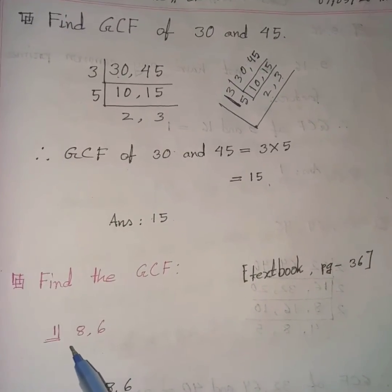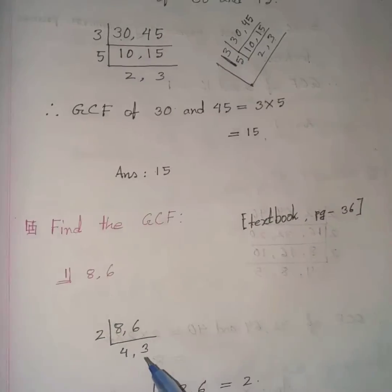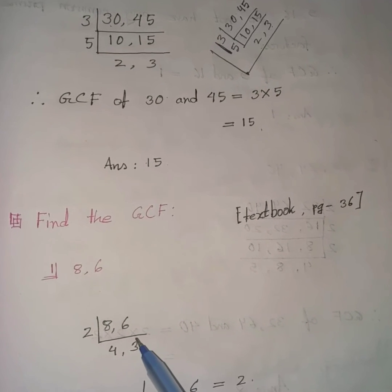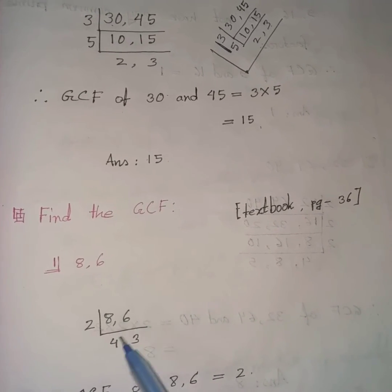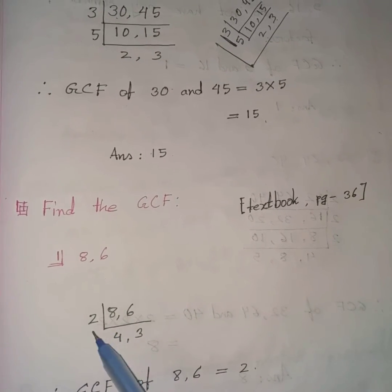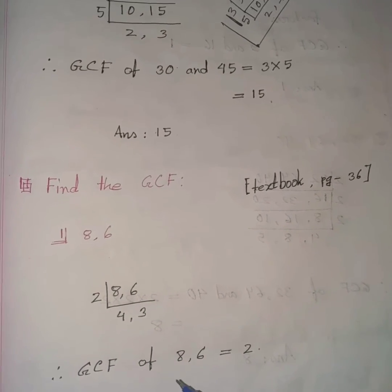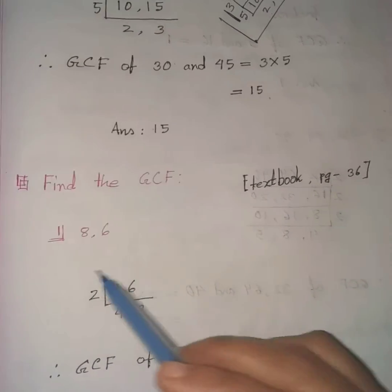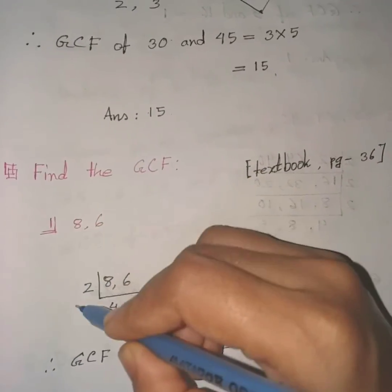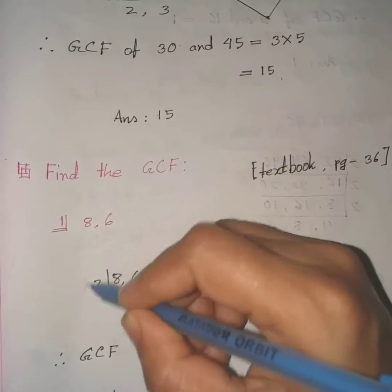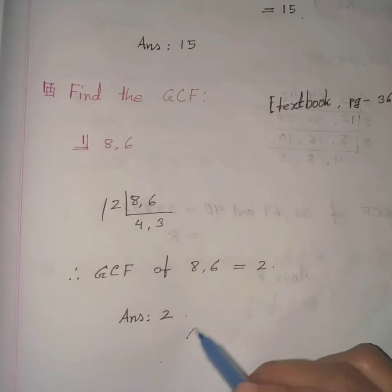Now, GCF of 8 and 6 — this is problem 1 from your textbook page 36. Both 8 and 6 are even numbers, so 2 is a common prime factor. Dividing 8 by 2 we get 4, and dividing 6 by 2 we get 3. Therefore the GCF of 8 and 6 is 2, as it is the only common prime factor. Hence the answer is 2.